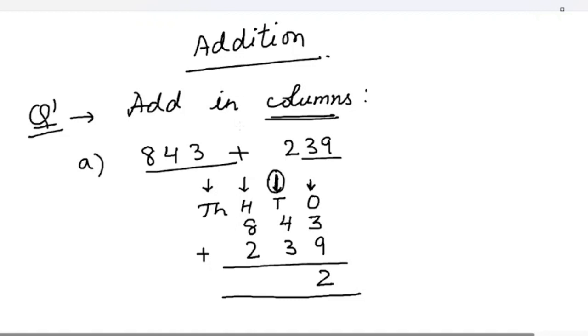So 1 here will come and then 4 plus 3 plus 1 which is 8. 8 plus 2 is 10. So here we are getting the thousands place also. The answer is 1082.